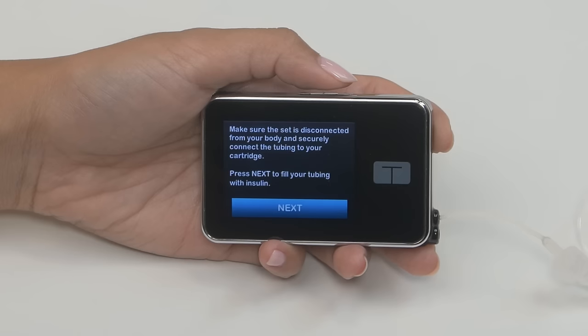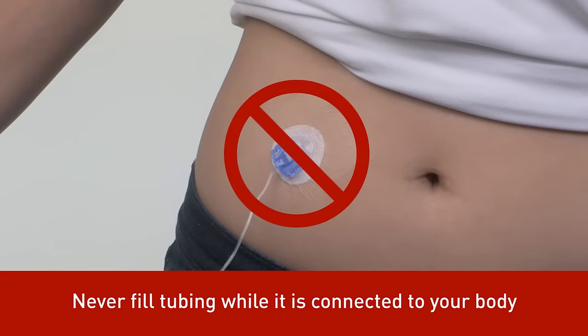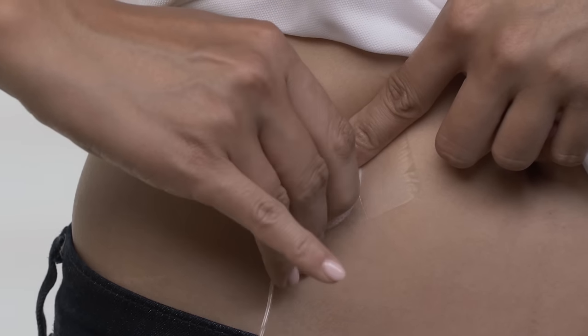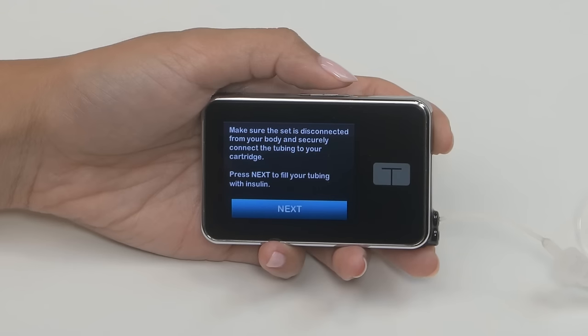Next, your pump will prompt you to fill your tubing with insulin. Never ever fill your tubing when it's connected to your body. This could result in the unintended delivery of insulin. Always disconnect your infusion set from your body before you begin a load sequence. Your pump will remind you of this each time you tap load.